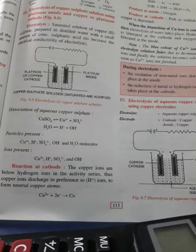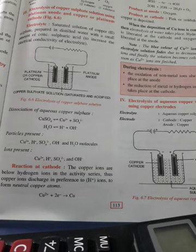Then what ions are present in electrolyte? Dissociation of aqueous copper sulphate will produce which ion? Copper ion, sulphate ion. Water will produce hydrogen ion and hydroxyl ion. So which ions are present? Cation: copper ion and hydrogen ion. Anion: sulphate ion and hydroxyl ion.